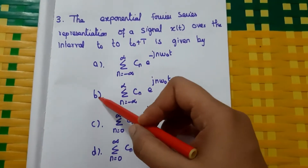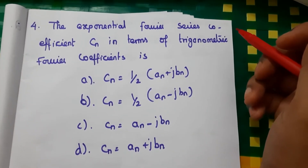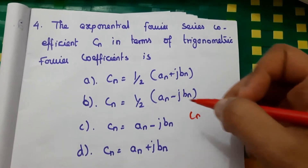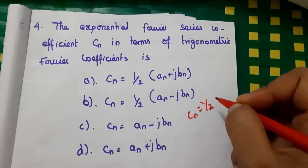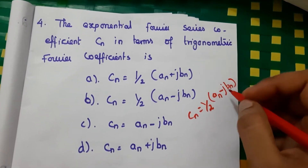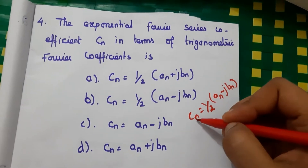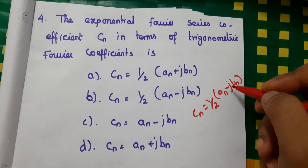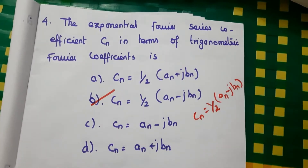Fourth question: the exponential Fourier series coefficient cₙ in terms of trigonometric Fourier series coefficients is cₙ = (1/2)(aₙ − jbₙ). Knowing the aₙ and bₙ values, you can find cₙ. So here the answer is B.